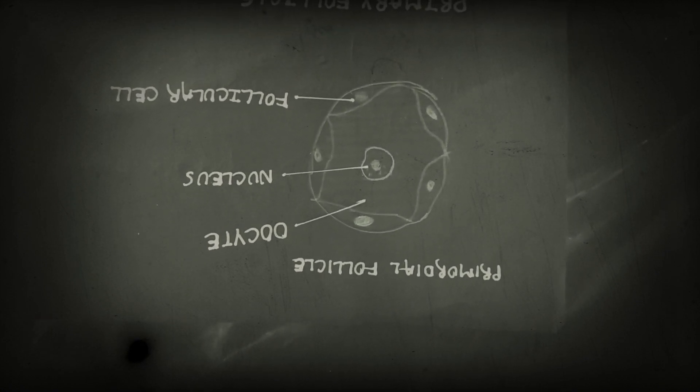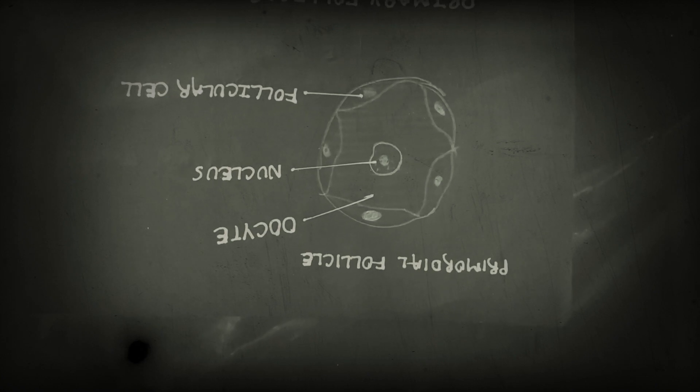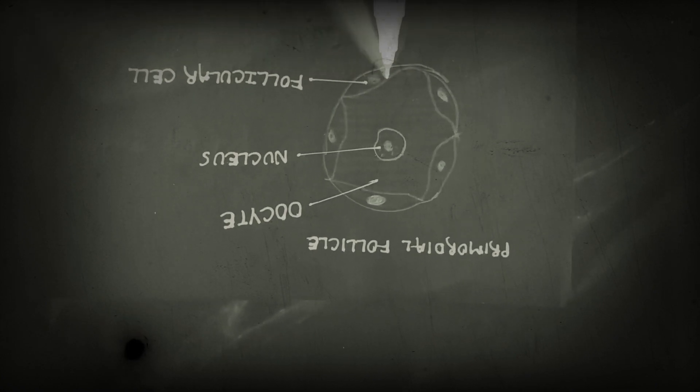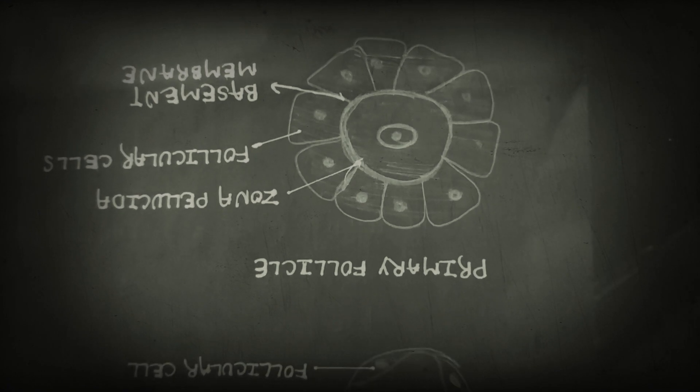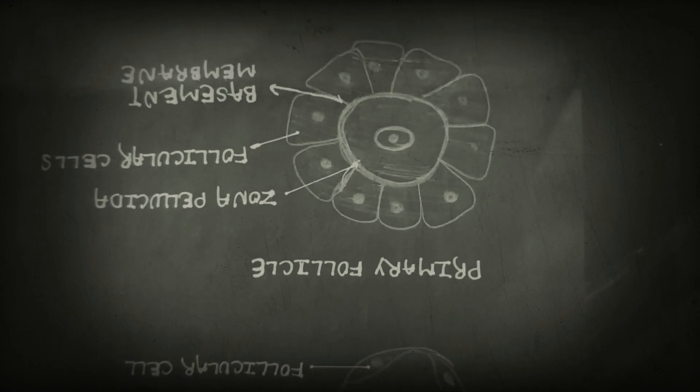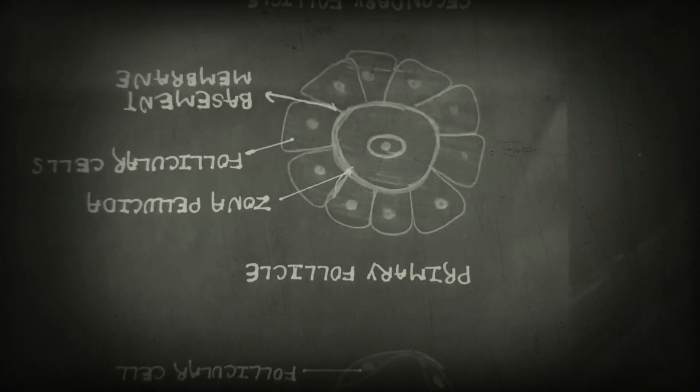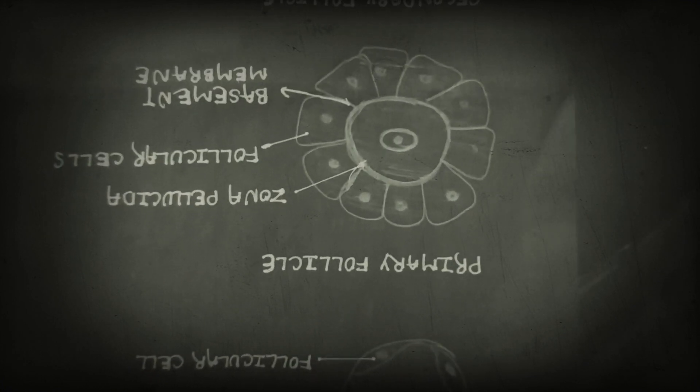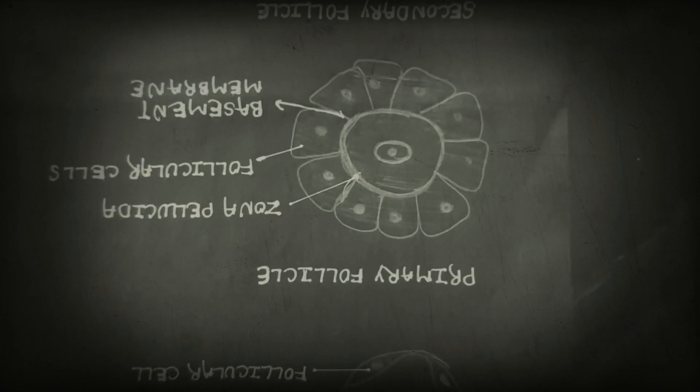During oogenesis, there are stromal cells and follicular cells. When primordial follicles rapidly divide through meiosis I, they become primary follicles.